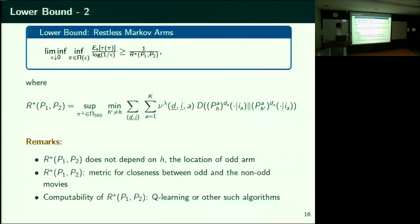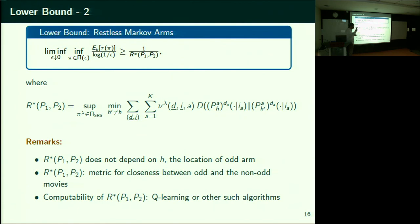R* has a supremum over all policies. It's not clear if there is an SRS policy achieving this supremum. But because it's a supremum, you can always come arbitrarily close. For every delta, there always exists one SRS policy such that it's within 1/(1+delta) of the supremum. Just take that policy and run a simple log likelihood ratio based test.